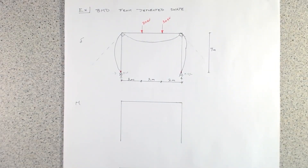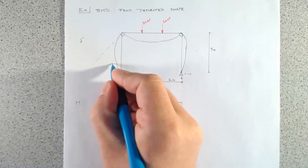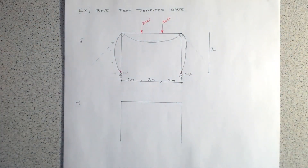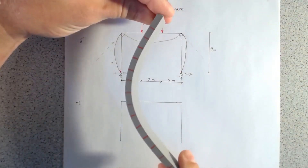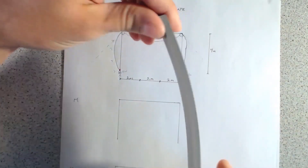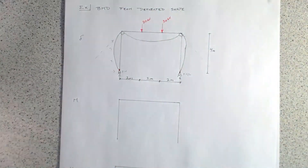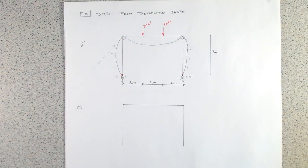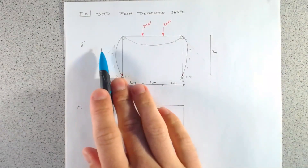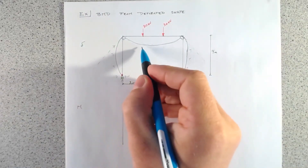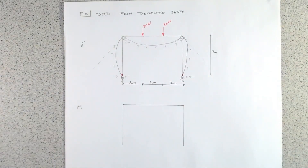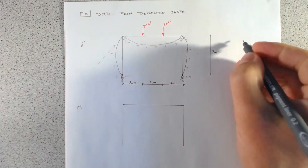Now let's plot the tension side — writing little T's where we know we have tension. If the column is bending outward, the outside is in tension and the inside is in compression. Then the outside is in tension again. So we have tension on the outside of the columns and tension on the underside of the beam. But we've run into an issue, because recall that one of our rules is that if we have a moment at a corner — let me draw a little element here — the moment has to be equal and opposite.